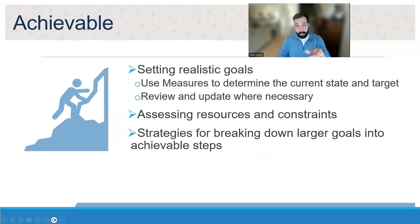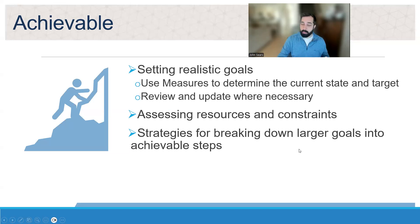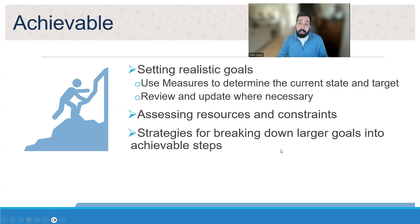The next part of SMART is Achievable. We want to focus on setting realistic goals, using measures to determine a current state and a target and updating them as necessary. You also want to assess your resources and constraints, because even if something makes sense as a goal, if the conditions or timing aren't right that matters. Consider strategies for breaking larger goals into more achievable steps — for example, focusing on cardio first and then increasing muscle rather than tackling everything at once.